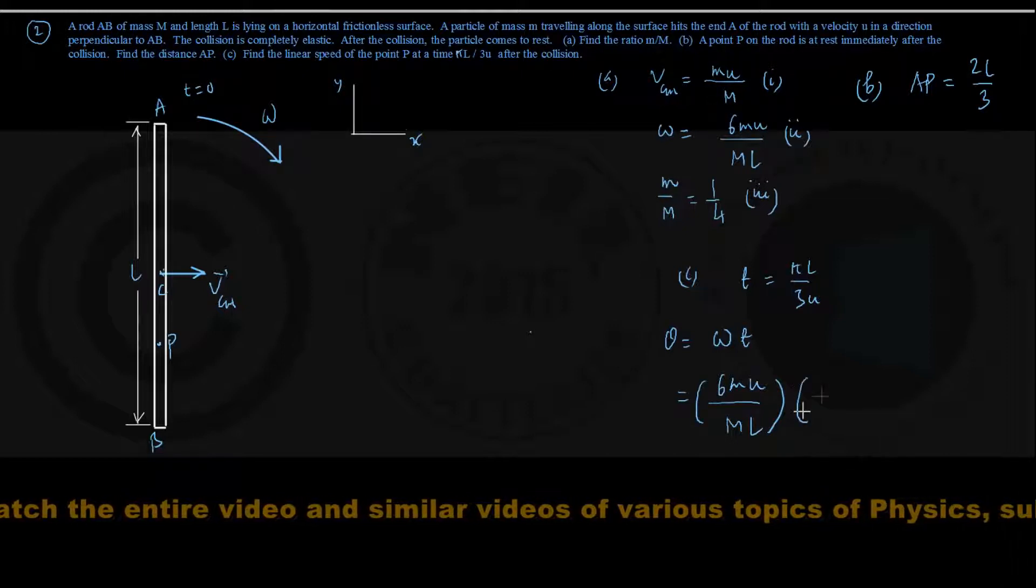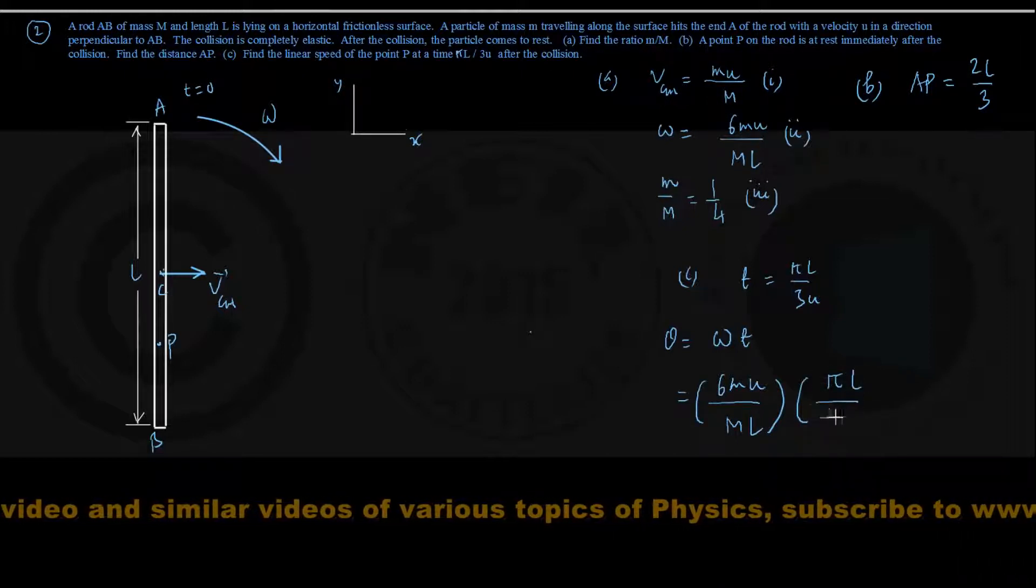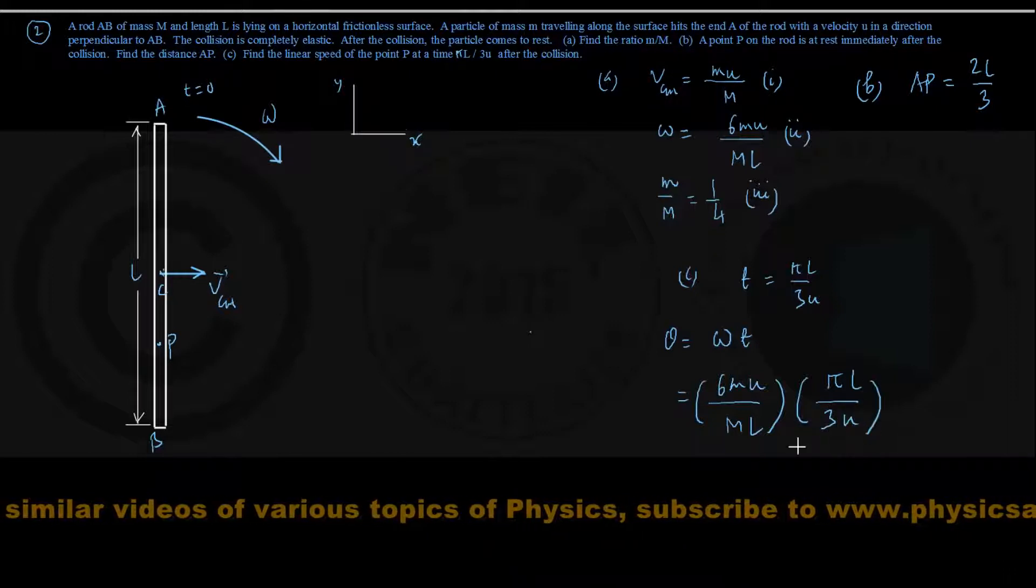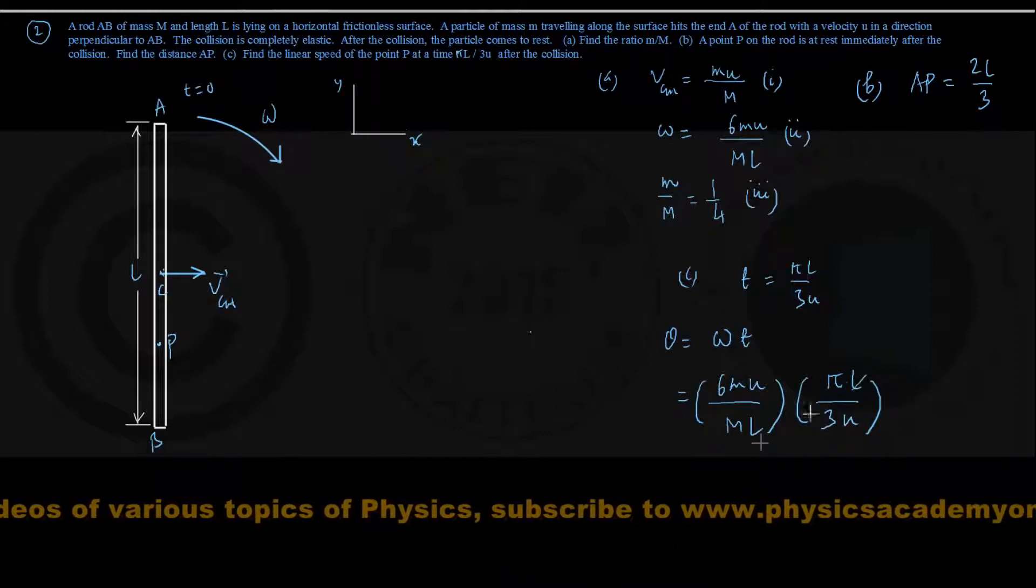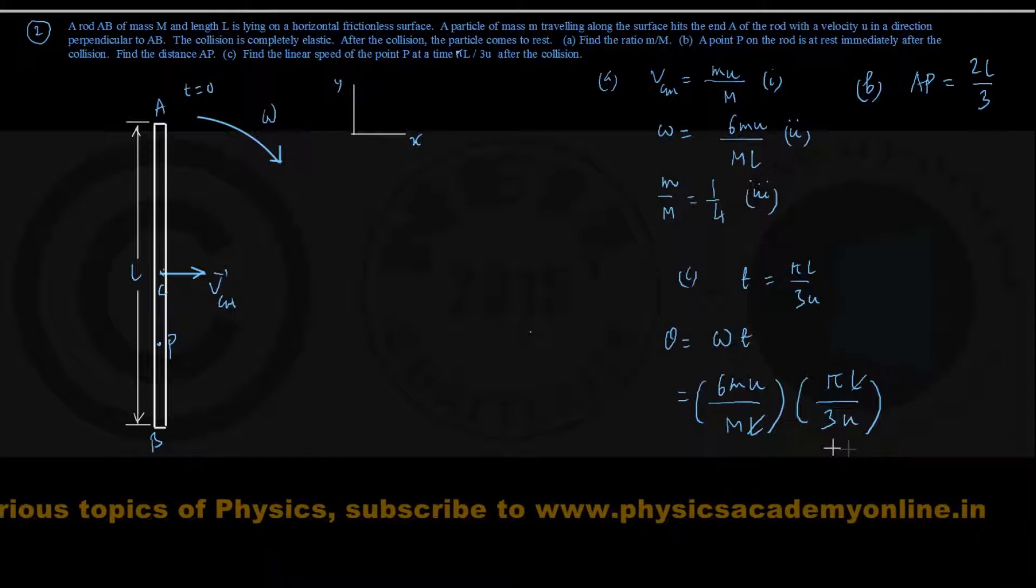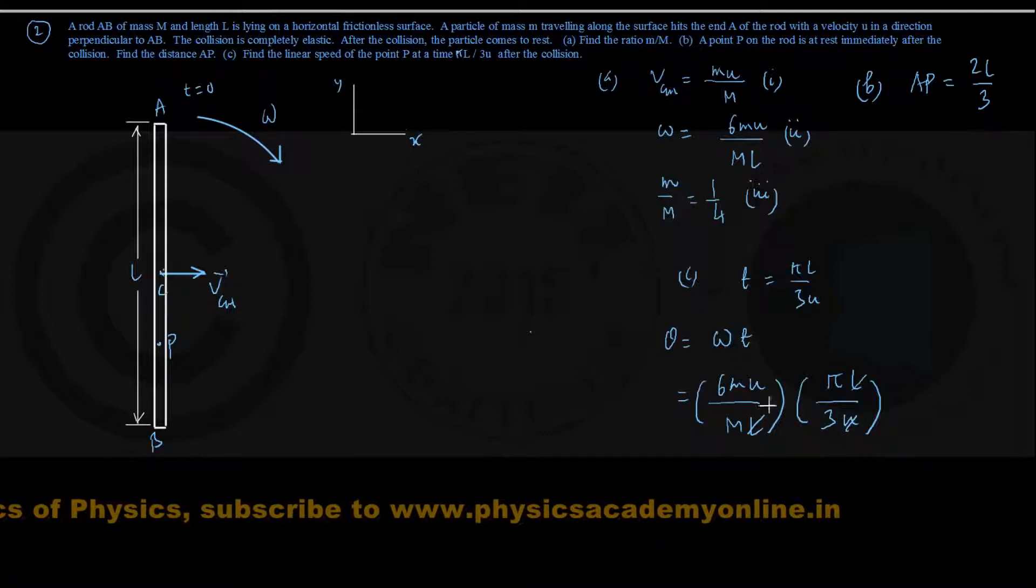The time they have given is π times L divided by 3 times U. I can see capital L cancelling out, U also cancelling out, and 3 is gone.